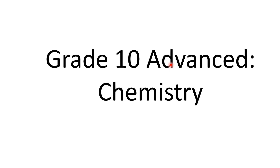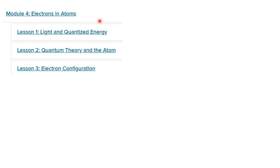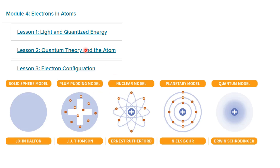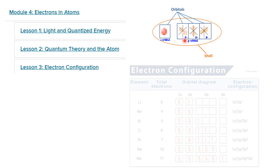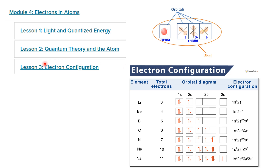So what did you cover in grade 10 advanced chemistry? You started in module 4 — electrons in atoms. You covered lesson 2 and lesson 3; lesson 1 was enrichment. We focused on the models of the atom, mainly Bohr's model and the quantum mechanical model. We studied the electrons — where do they live, how can we represent them. So we covered the orbitals, energy levels, energy sublevels: s, p, d, f. And we did electron configuration in lesson 3 — 1s2, 2s2, 2p6, and so on.